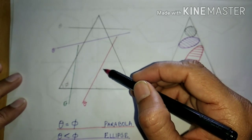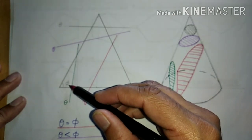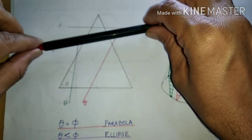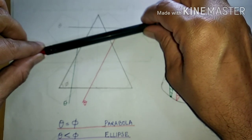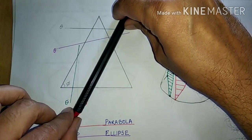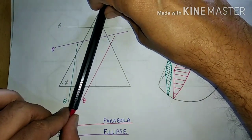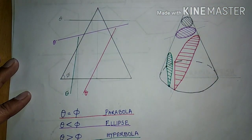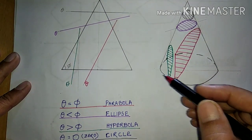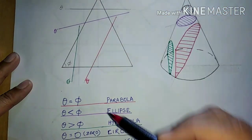If the cutting plane line has an inclination greater than phi: first we had a plane parallel to HP (theta = 0, circle), then inclined with theta less than phi (ellipse), then theta equal to phi (parabola). Now, if the angle keeps increasing and becomes greater than phi, we get a hyperbola. If at any given time the cutting plane line cuts the base and passes through the apex, we will always get a triangle.